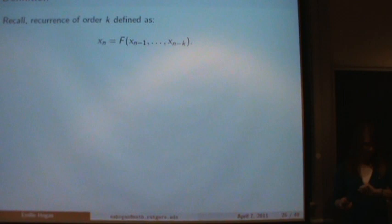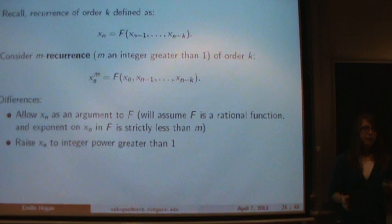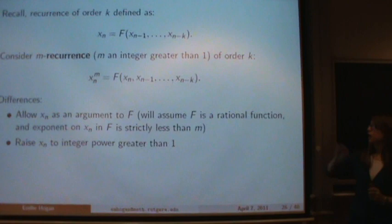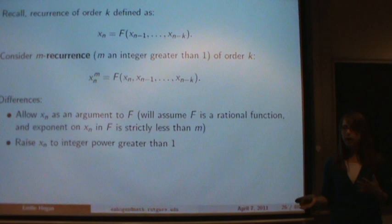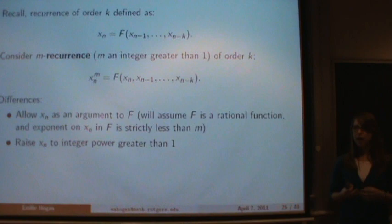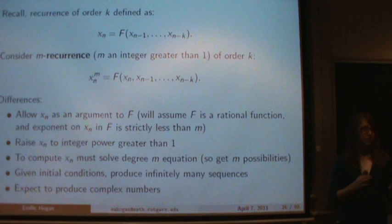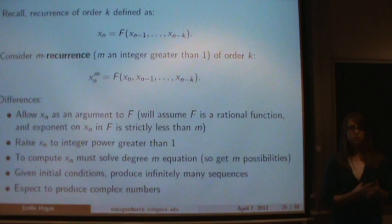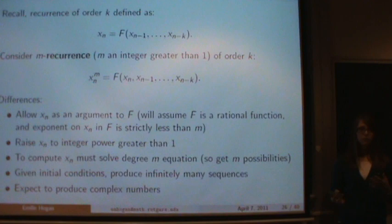I want to consider something called an m-recurrence. On the left-hand side, we're raising x_n to some integer power strictly greater than 1, and we're also allowing x_n to be in the input on the right-hand side. In this talk, f must be some rational function, and the power on x_n in this function has to be strictly less than m—otherwise it doesn't really make sense. So in order to compute x_n, we have to solve a degree-m equation in x_n, and we get m possibilities for the next value in our sequence—producing an infinite number of sequences from one set of initial conditions.